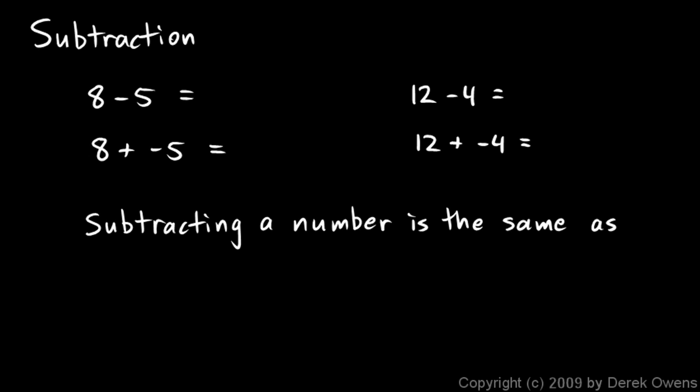8 minus 5, that's pretty easy. 8 minus 5 is 3, and that's the same thing as 8 plus negative 5. That's also 3. And over on the right, 12 minus 4 is 8, and 12 plus negative 4 is 8.